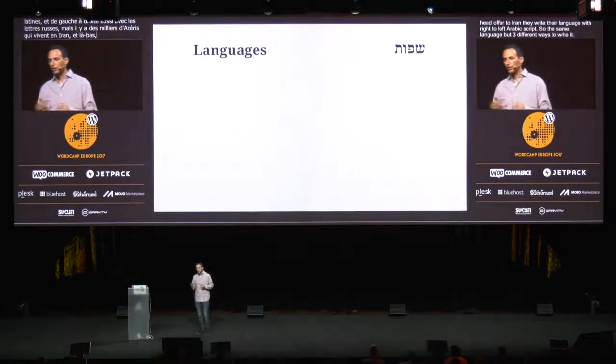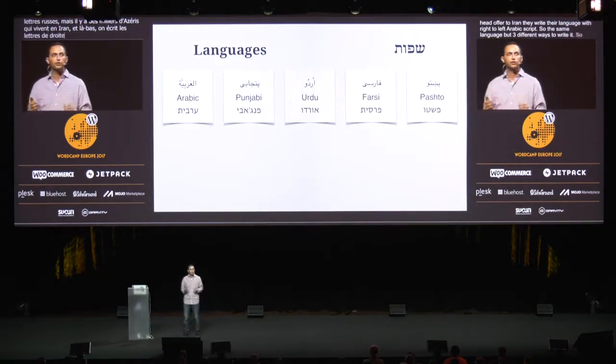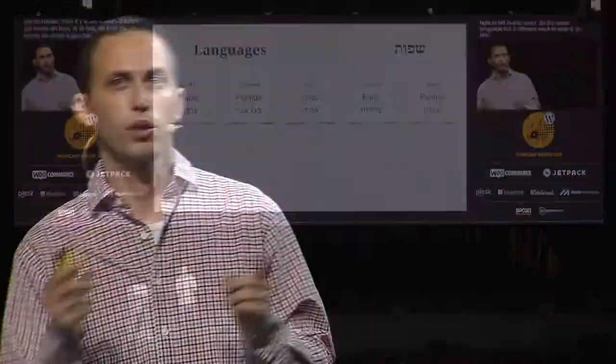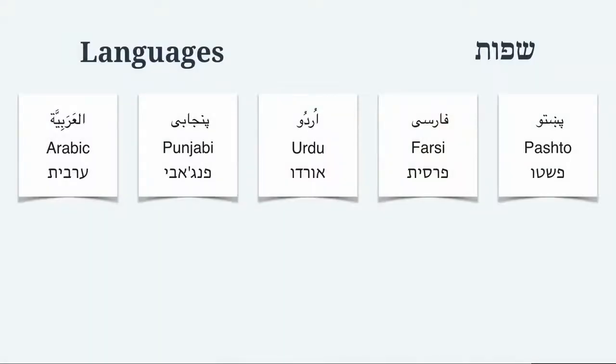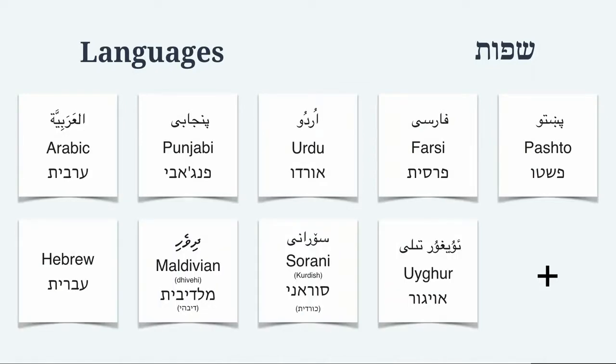So what are the most common languages that use primarily a right-to-left script? We of course have Arabic — it's the biggest one. But we also have Punjabi, Urdu, Farsi or Persian used in Iran, Pashto, and then languages like Maldivian, Sorani, or Uighur, which is used in parts of China. There are, of course, many more smaller languages.